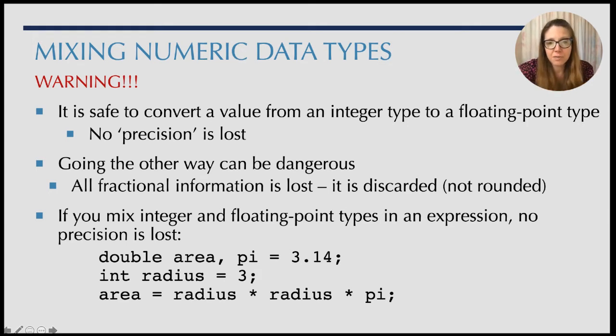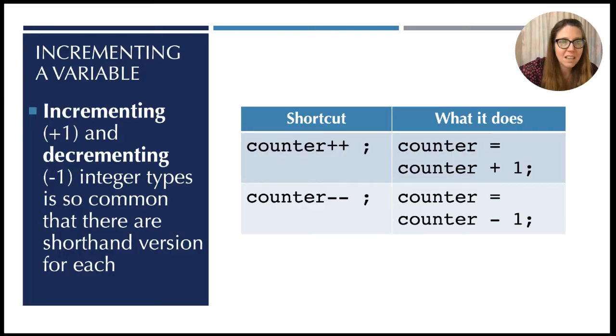If you mix integer and floating point types in an expression, no precision is lost. So in the following example we have two variables, area and pi, that are of type double - they're floating point types - and we have an integer variable radius. When we multiply in the last line radius times radius times pi, we're taking an integer times an integer times a double, and that results actually in a double. And so we keep the precision that we require to remain a double, and so the area doesn't lose any of that key information that needs to be there.